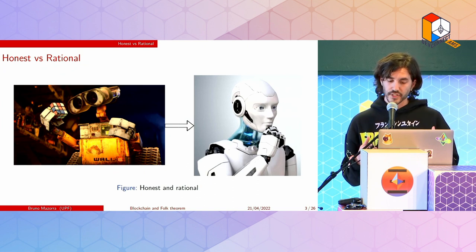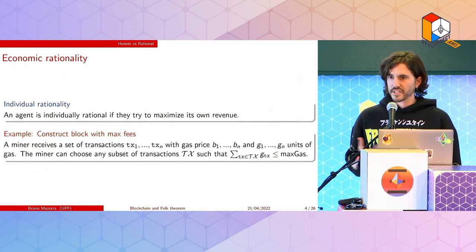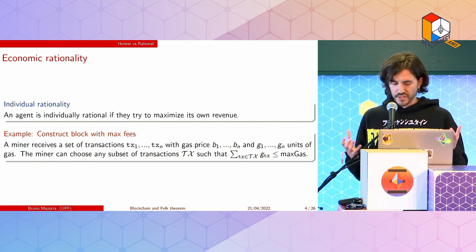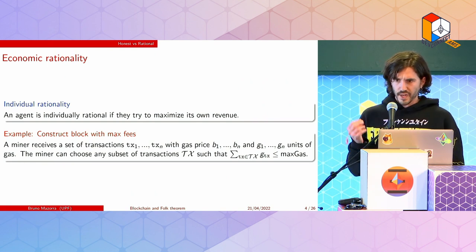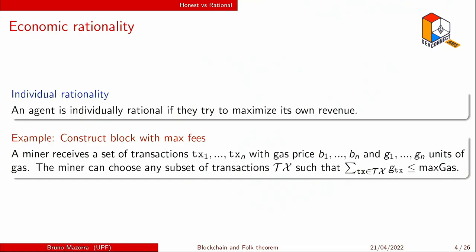Individual rationality means: if an agent is rational, it will try to maximize its own revenue. A first example generally accepted in blockchain technology is when a miner constructing a block maximizes fees — it's not putting its own transactions first. It receives a set of transactions with gas prices and gas units and tries to construct the block that maximizes its own revenue, subject to constraints like the sum of gas used being bounded.